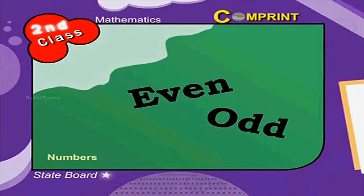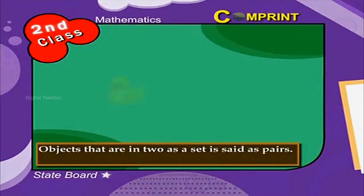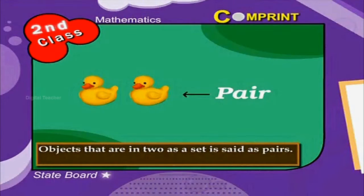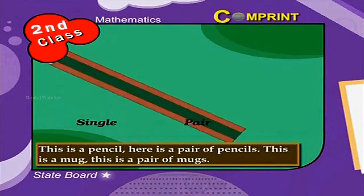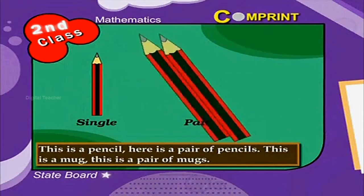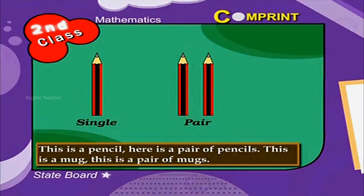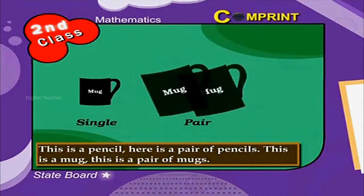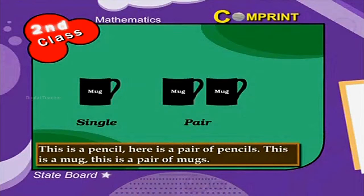Even and odd numbers. Objects that are in two as a set is said as pairs. Look at the picture. This is a pencil, here is a pair of pencils. This is a mug, this is a pair of mugs.